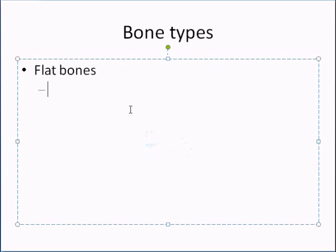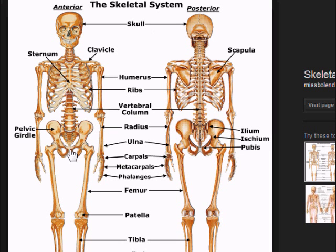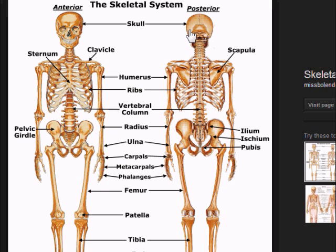Flat bones include things like your scapula. As you can see in the image, the scapula is laid down flat. The skull bones are also flat — they're not long, not short, not irregular. If you were to cut them into pieces, they would essentially be flat.